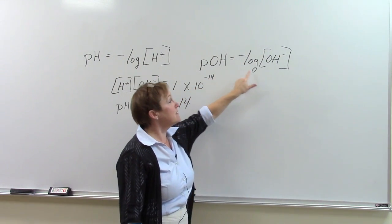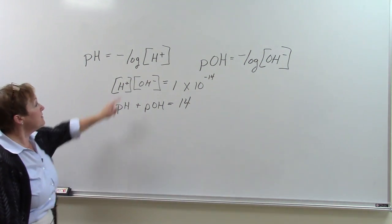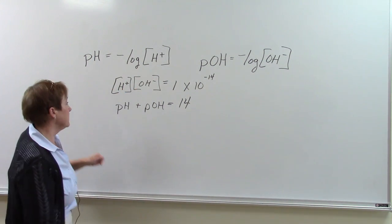The pOH is the negative log of the hydroxide ion concentration, again in molarity. That's what the square brackets mean, molarity.